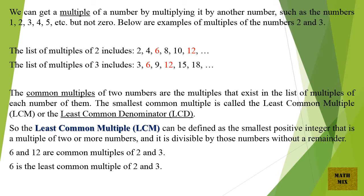The common multiples of 2 numbers are the multiples that exist in the list of multiples of each of them. The smallest common multiple is called the least common multiple, or the least common denominator. So the least common multiple is the smallest positive integer that is a multiple of 2 or more numbers, and is divisible by those numbers without remainder. 6 and 12 are common multiples of 2 and 3; 6 is the least common multiple of 2 and 3.